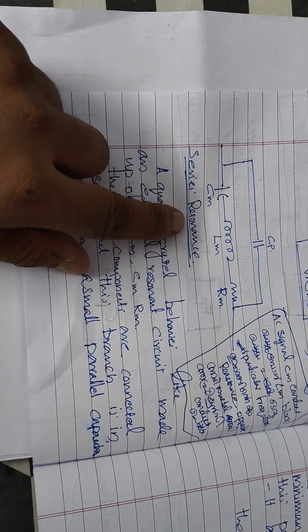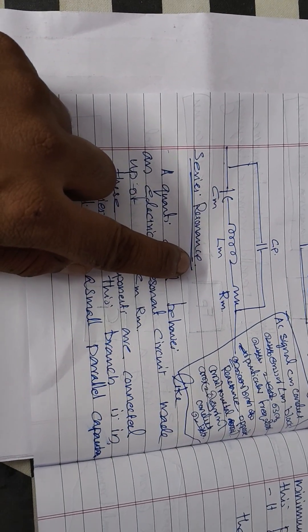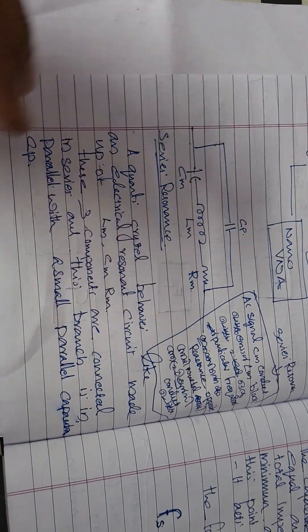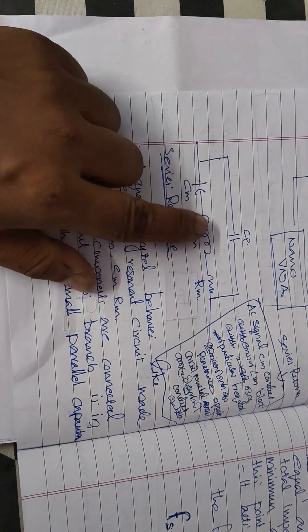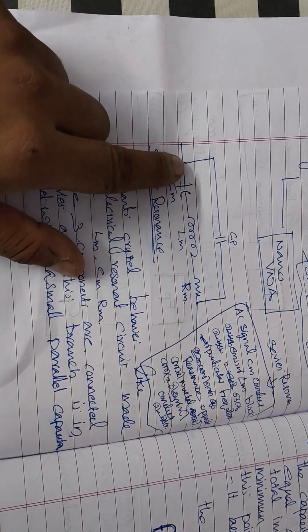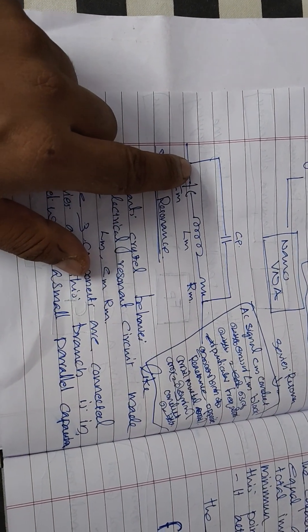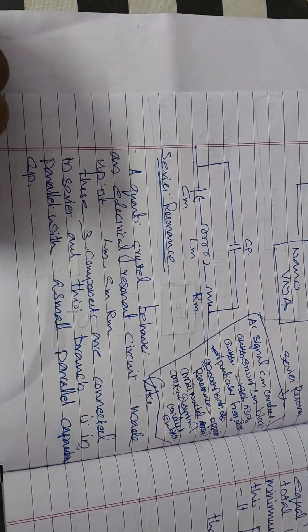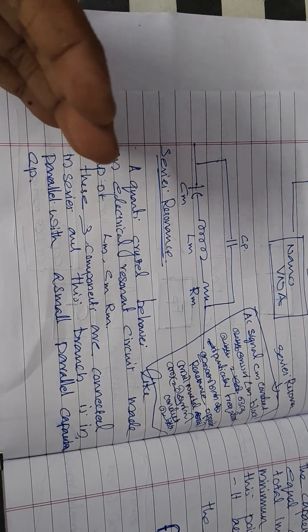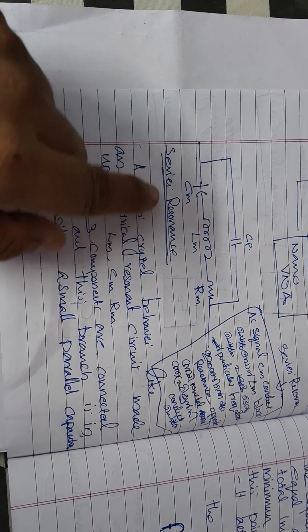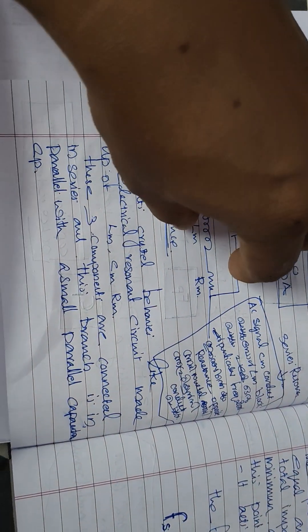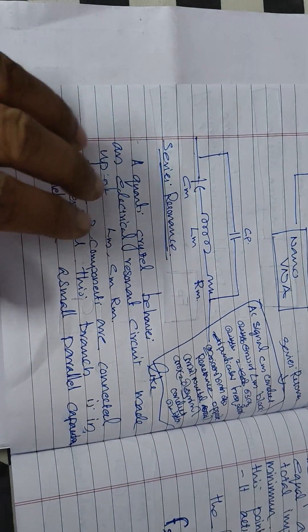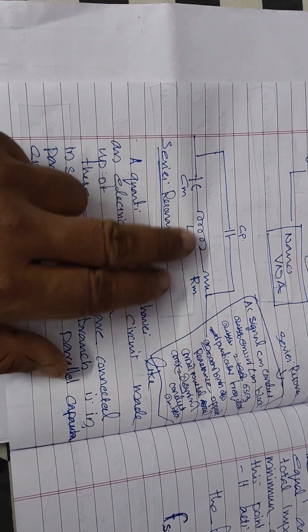The second is parallel resonance frequency. The capacitor is connected in parallel with these three components. At a particular frequency after the series resonance frequency, it will act as a tank circuit and oscillate itself. That particular frequency is known as the parallel resonance frequency.